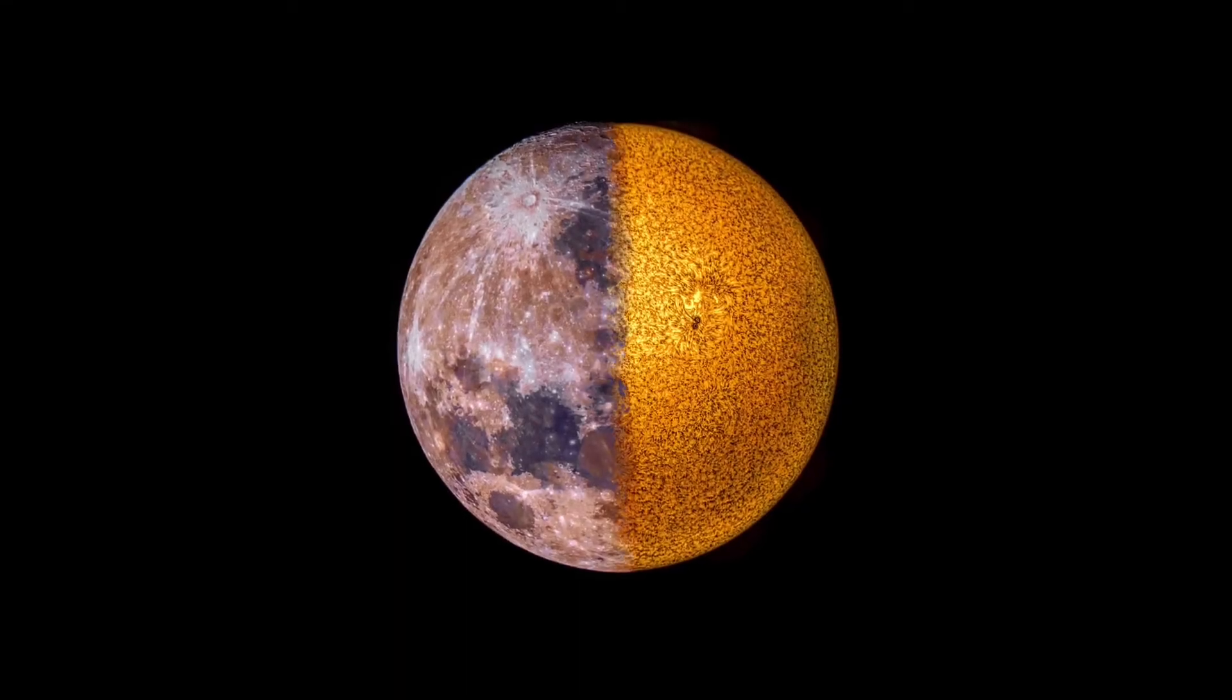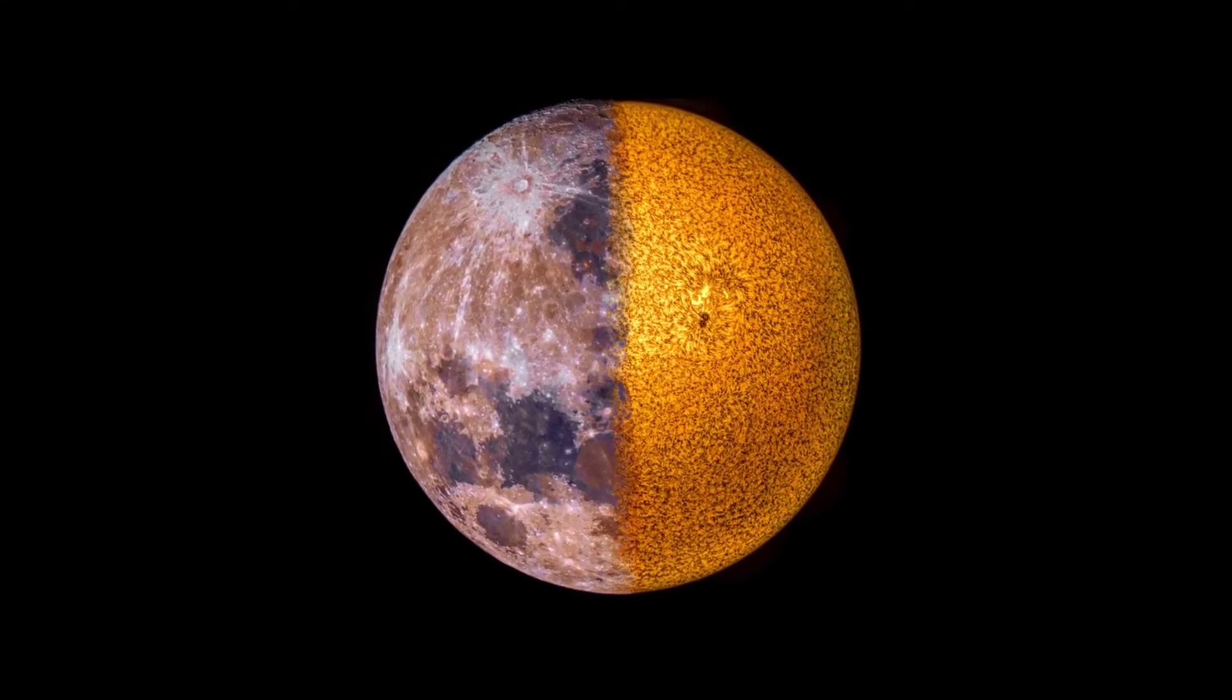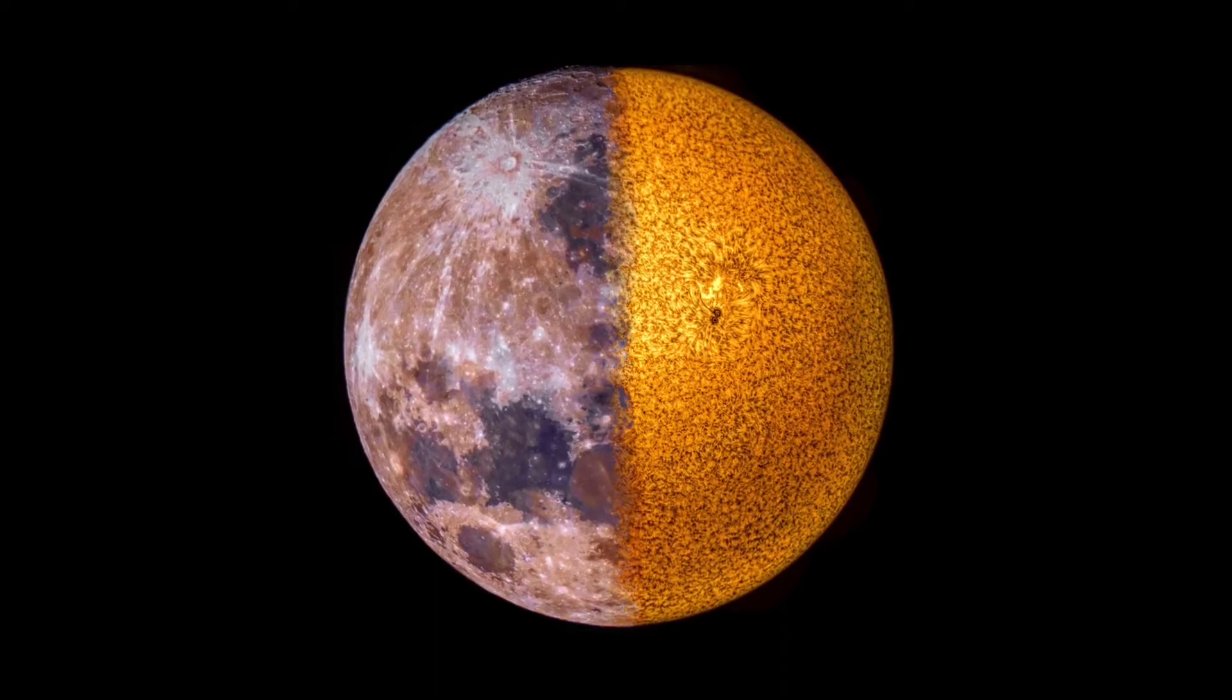The result? Well, the Moon and the Sun appear to be almost identical in size when viewed from the Earth.